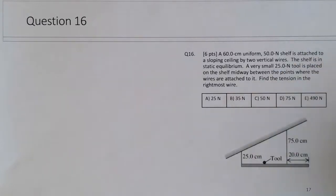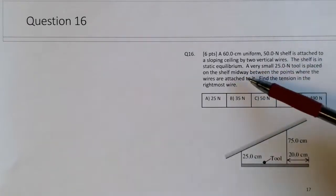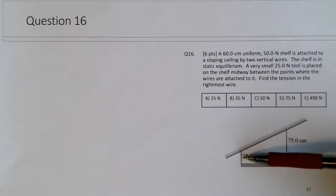The shelf is in static equilibrium, so that's a code here for that type of problem. A very small 25 Newton tool is placed on the shelf midway between the points where the wires are attached to it. Since it's halfway between these two wires, you'll find the tension in the rightmost wire.